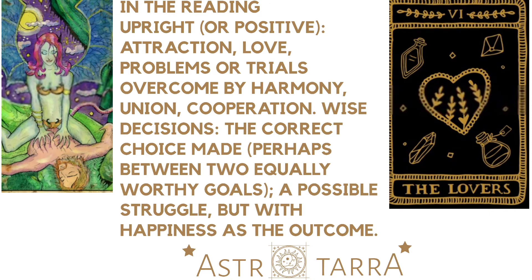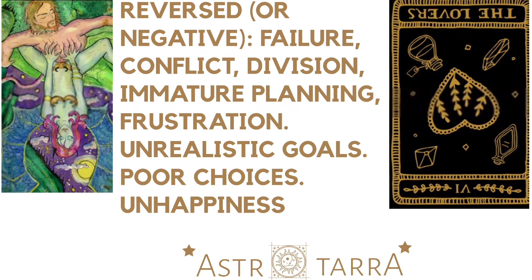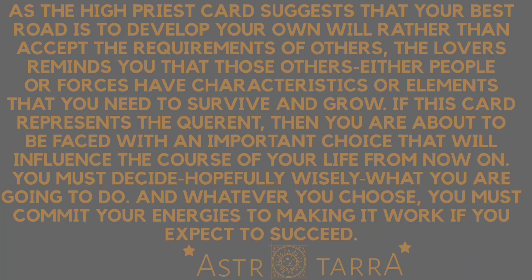In a reading, upright or positive meanings include: attraction, love, problems or trials overcome by harmony, union, cooperation, wise decisions, the correct choice made — perhaps between two equally worthy goals — and a possible struggle but with happiness as the outcome. Reversed or negative meanings include: failure, conflict, division, immature planning, frustration, unrealistic goals, poor choices, and unhappiness.